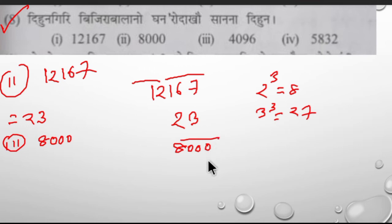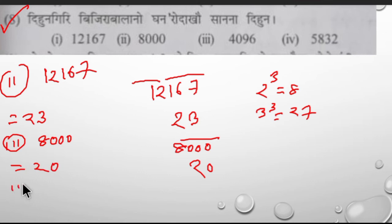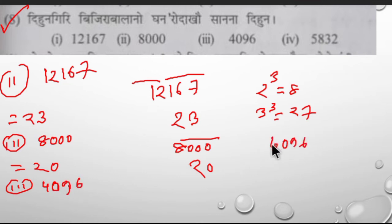This is 800. So this is 2. So this is 20. So this is 4096. 4096 is 6. So it's 6.